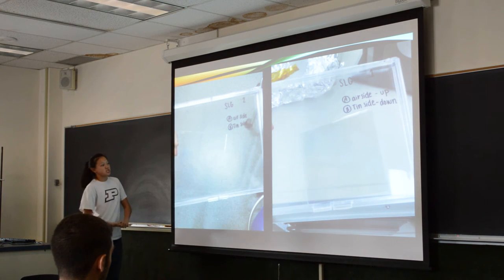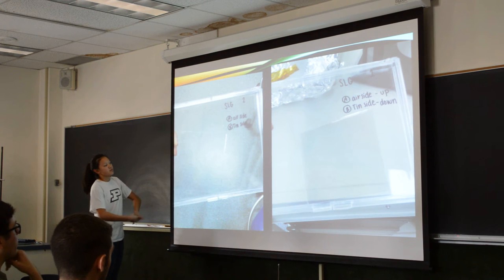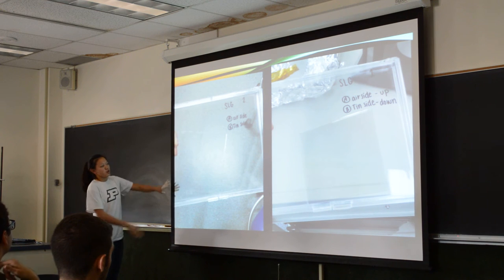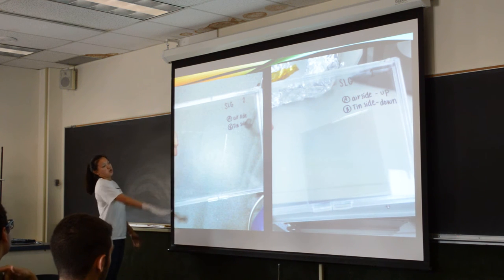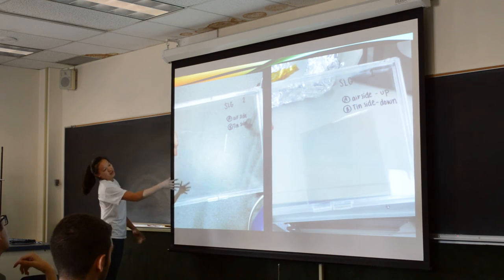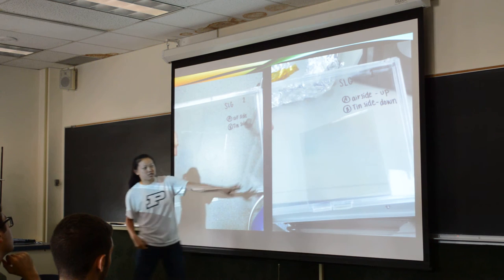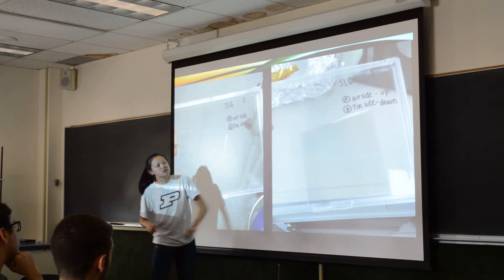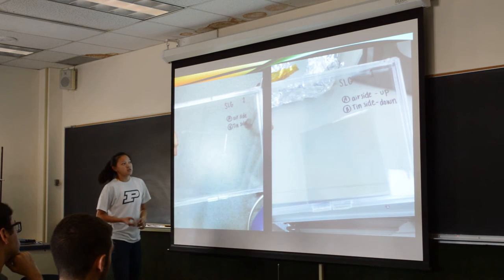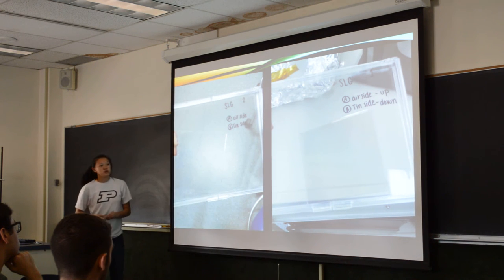This is the piece of glass before and after. Before, you can see it's really clear — you can barely see it. Afterwards, you can actually see the layer; it's a little discolored. I thought that was pretty cool.